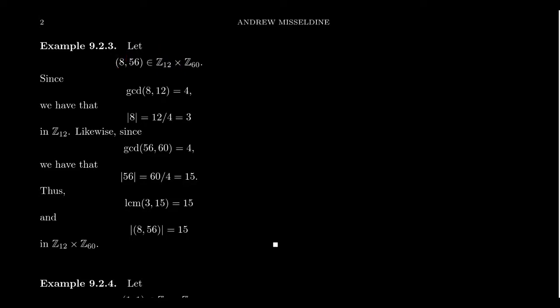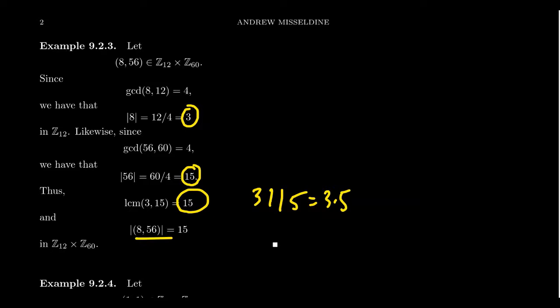Likewise, let's consider the order of 56 inside of Z₆₀. By a similar computation, the GCD of 56 and 60 is likewise 4. Therefore, the order of 56 will be 60 divided by 4, which is 15. And so then highlighting those things right there, the order of 8 inside of Z₁₂ is 3. The order of 56 inside of Z₆₀ is 15. And so the least common multiple of 3 and 15 will be 15. Notice that in this situation, 3 actually divides 15, since it's 3 times 5 right there. So the LCM would be 15. And so the order of the element (8,56), that's an element of order 15 inside of Z₁₂ cross Z₆₀.